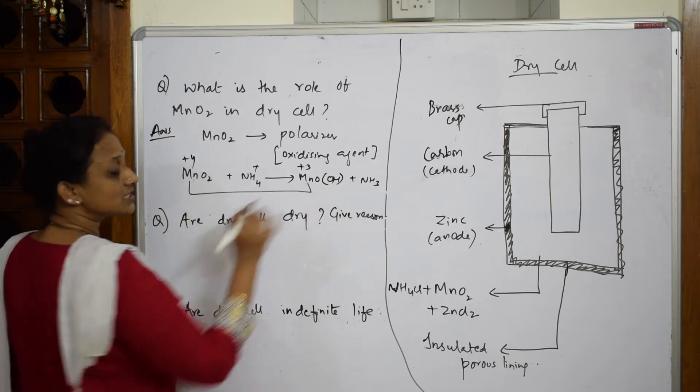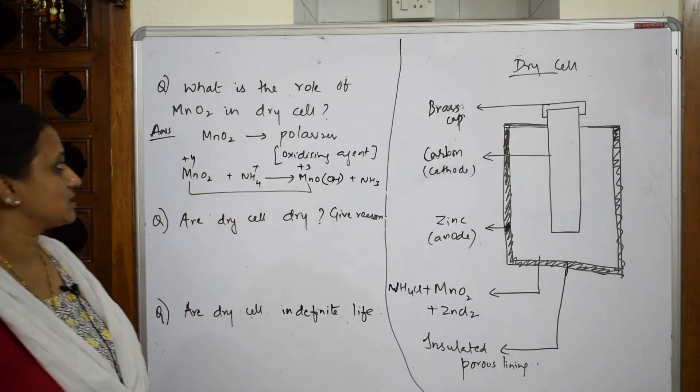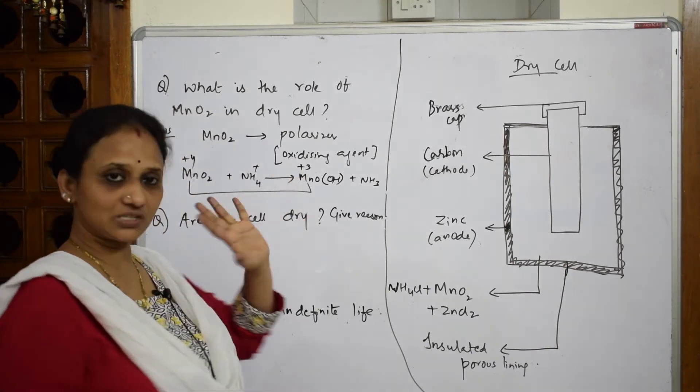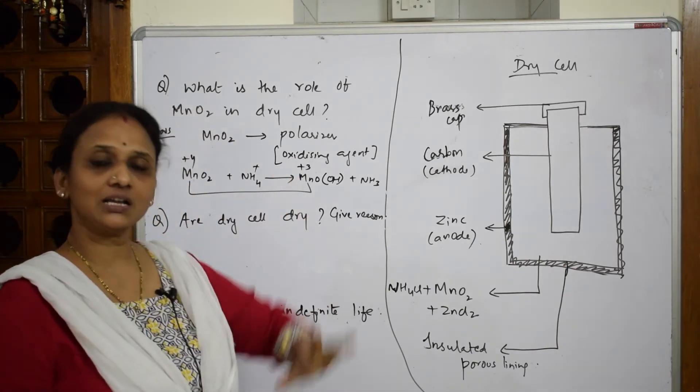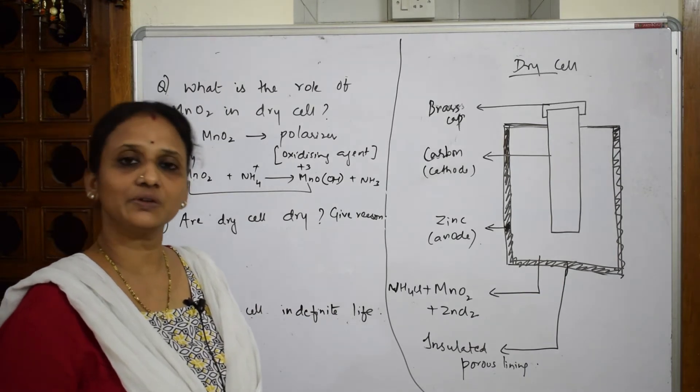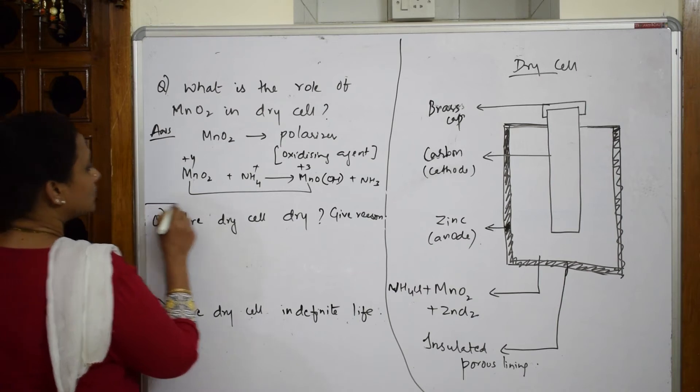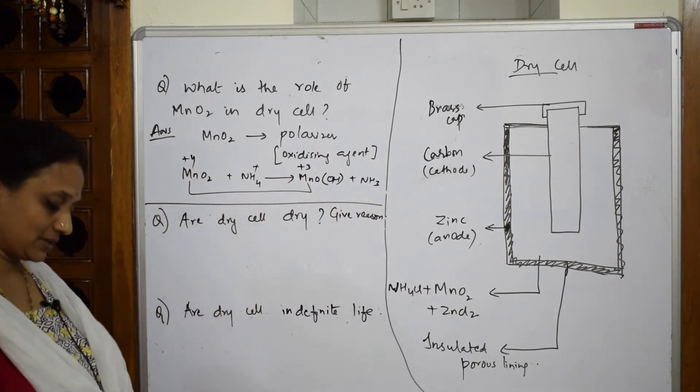Here when I see the oxidation state is plus three. Now isn't it acting as an oxidizing agent? Yes. So this is the thing. Remember it acts as a polarizer, that means there's a change in oxidation state. Point number one: it will not allow hydrogen bubbles to evolve in the particular cell. That's the role. Now next important, this is basically an olden day concept.